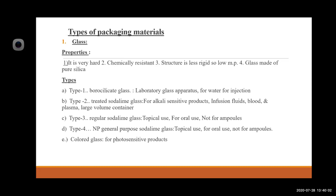Properties of glass: it is very hard, chemically resistant, less rigid in structure, and has a low melting point. Glass is made up of pure silica. There are four important types: Type I is borosilicate glass, used in laboratory apparatus, for water for injection. Type II is treated soda-lime glass, used for alkali-sensitive products, infusion fluids, blood and plasma, and large volume parenterals. Type III is regular soda-lime glass, for topical and extra-oral use, not for ampoules. Type IV is general-purpose soda-lime glass, for oral use, not for ampoules. Colored glass is used for photosensitive products.